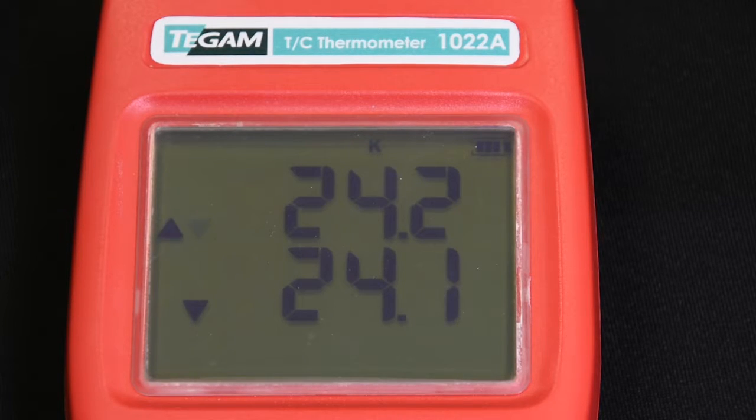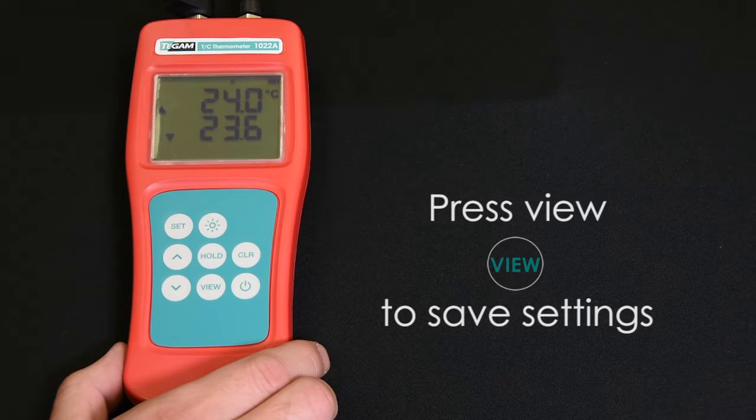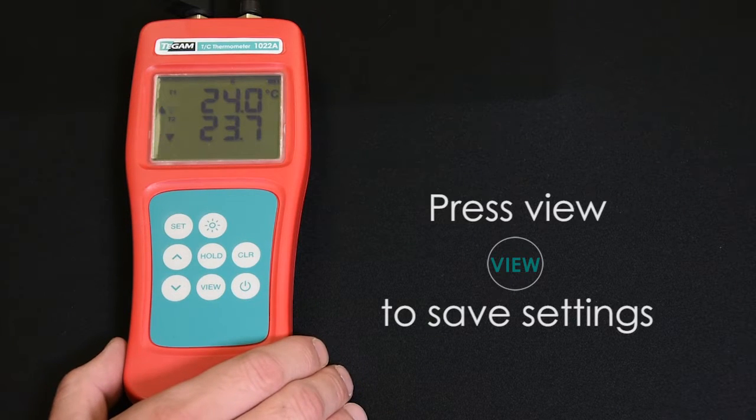When the correct temperature unit is selected, press the view key to save that setting and exit the setup menu.